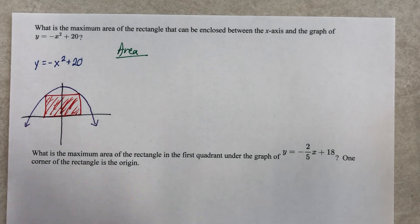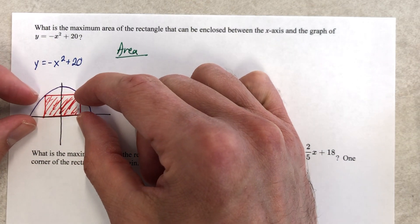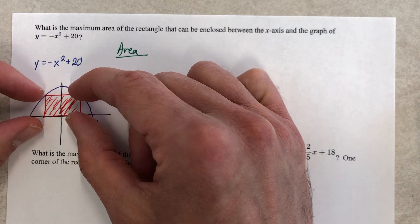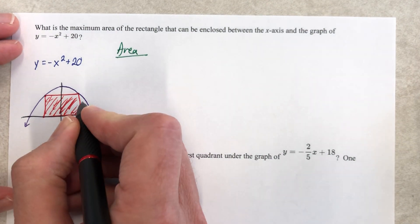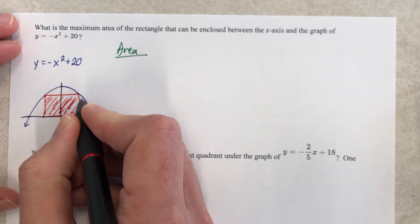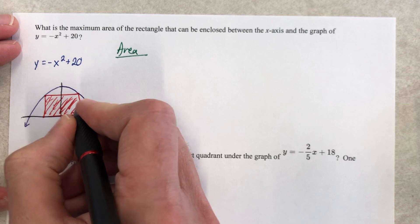Now, is this rectangle here or is it wider and shorter or is it skinnier and taller? Which one's going to give us the maximum area? I don't know. I really don't know. But here's what I do know: that this is the height. Well, you know what? We're on a coordinate plane. Let's call it Y.